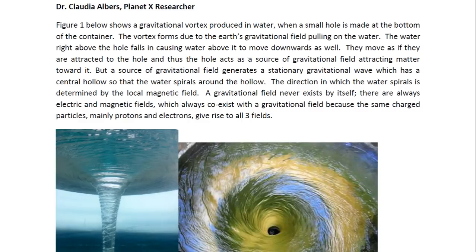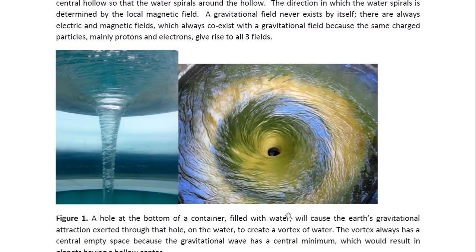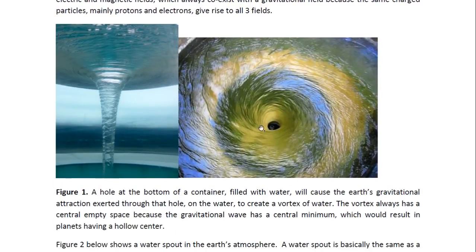The direction in which the water spirals is determined by the local magnetic field. A gravitational field never exists by itself. There are always electric and magnetic effects, which always coexist with the gravitational field, because the same charged particles, mainly protons and electrons, give rise to all three fields. Here are these gravitational vortices, or water vortices, and these are created by a hole at the bottom of a container, so that the water starts moving towards the hole.